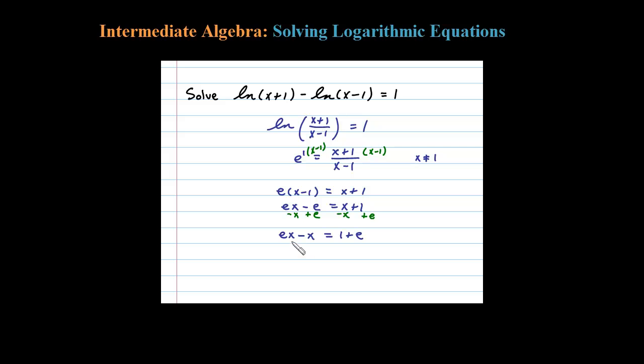Now x turns out to be a GCF, so if you factor that out, what will be left is e minus 1. And then to isolate the x, divide both sides by e minus 1.